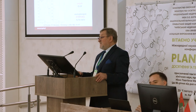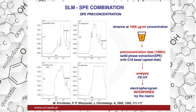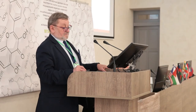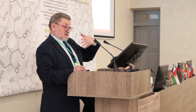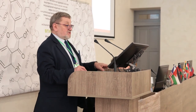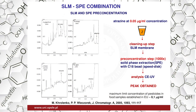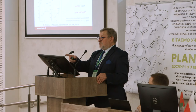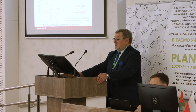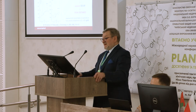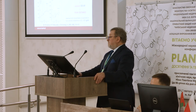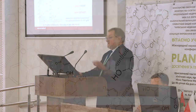Sometimes we should make two methods depending on the complexity of the samples — that means a pre-concentration step and then the extraction of the compounds we need. As you can see, the limit of detection in this case was 0.05 micrograms per liter, while the maximum permitted concentration of pesticide in food samples — juice samples in the European Union — was 0.1 micrograms per milliliter, so our method is two times lower.